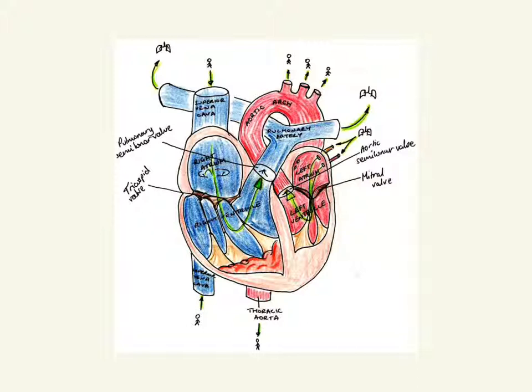Oxygen-rich blood coming from the lungs goes through here to the left atrium, then pumped to the left ventricle, and then finally pumped all over your body, giving every single cell oxygen.